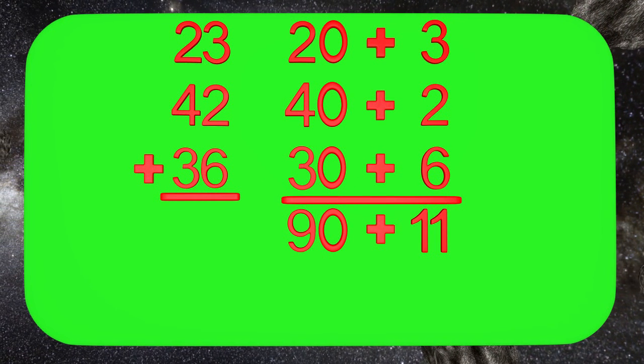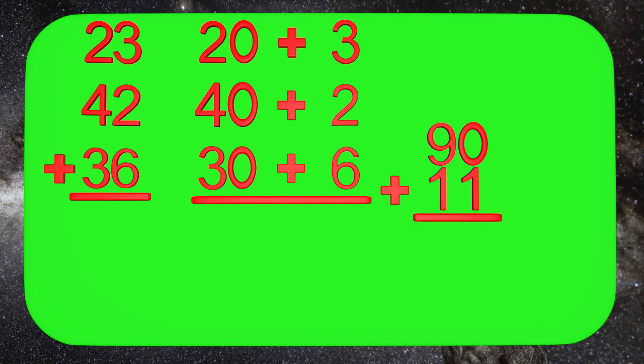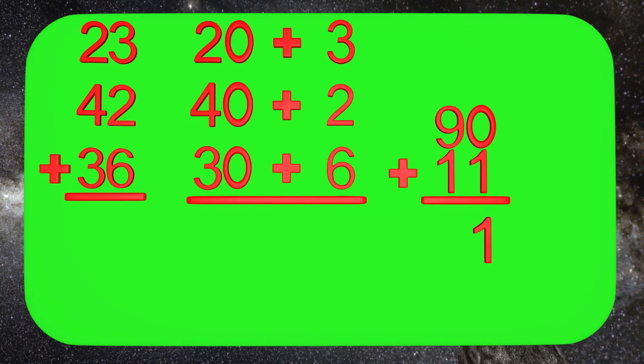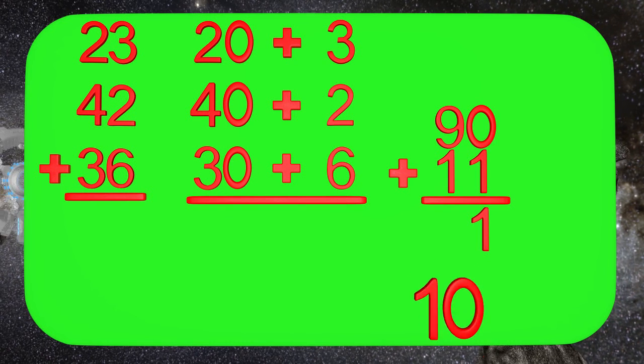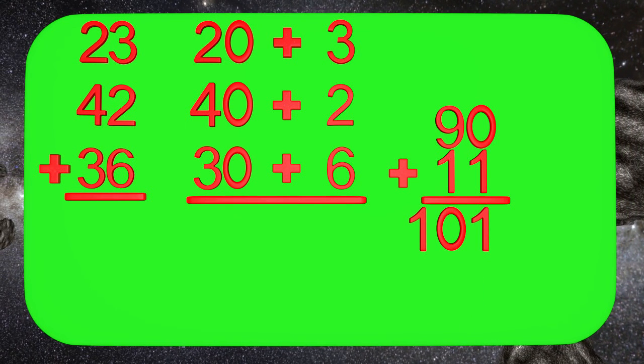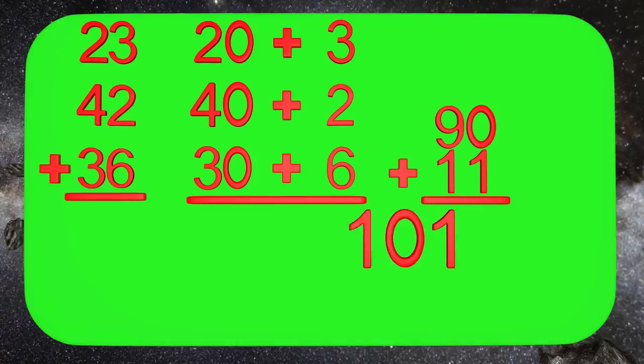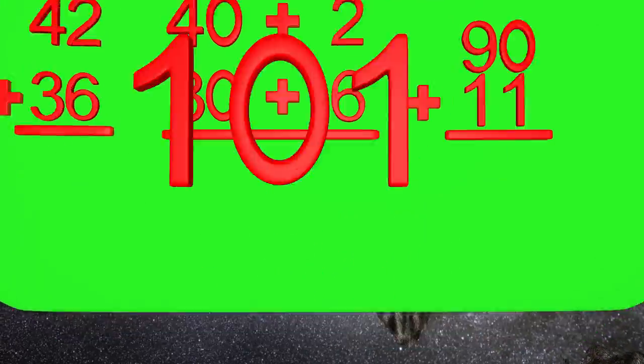Now we have to add 90 plus 11. 1 plus 0 is 1, and 9 plus 1 is 10. So the answer is 101. They have 101 stickers in all. Awesome job, guys!